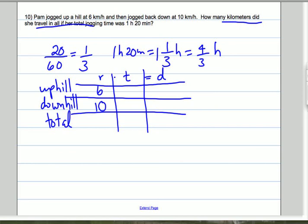So we're going to let this time be T. It doesn't matter which one - you can either let the uphill one be T or the downhill one be T. So if it took her a total of 4 thirds of an hour, and it took her T hours to go downhill, then it took her 4 thirds minus T to go uphill.